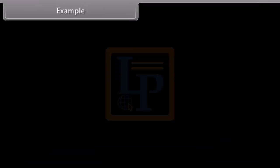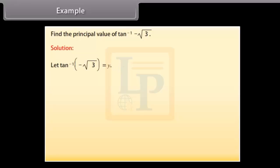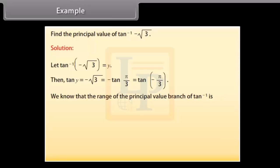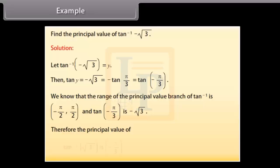Example: Find the principal value of tan⁻¹(-√3). Solution: Let tan⁻¹(-√3) = y. Then tan y = -√3 = -tan(π/3) = tan(-π/3). We know the range of the principal value branch of tan⁻¹ is (-π/2, π/2), and tan(-π/3) = -√3. Therefore, the principal value of tan⁻¹(-√3) is -π/3.